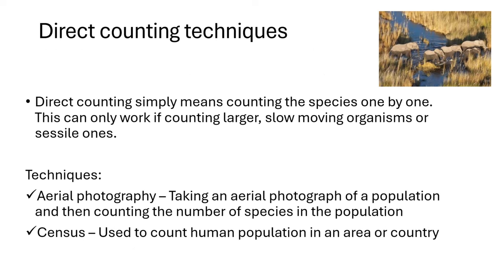Let's look at these techniques of counting species in a population. Direct counting simply means that we are counting the species one by one. For example, in this photograph which I've inserted, there are five elephants — we can directly count them: one, two, three, four, five. So what I've just done is direct counting.